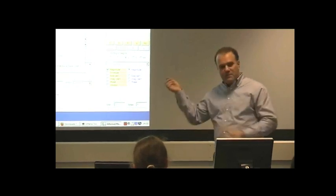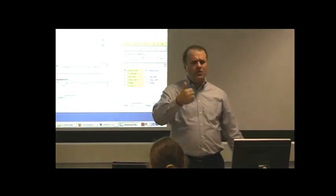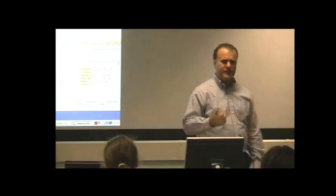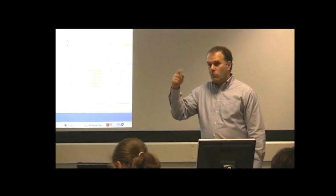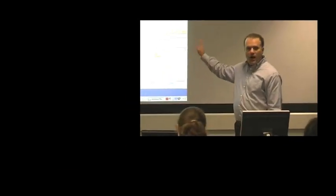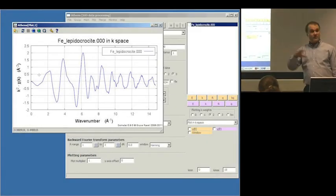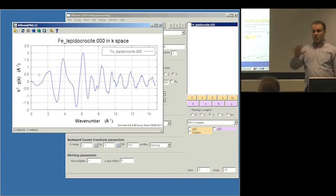The defaults are good enough that they save you from the thought process, at least at the beginning. If your data is not too challenging, you basically get to look at your data in energy, in K, and in R before you have to start thinking. But we need to be able to evaluate all of these things. So the first thing I'm going to do is explain how the normalization process works, then how the background removal process works.